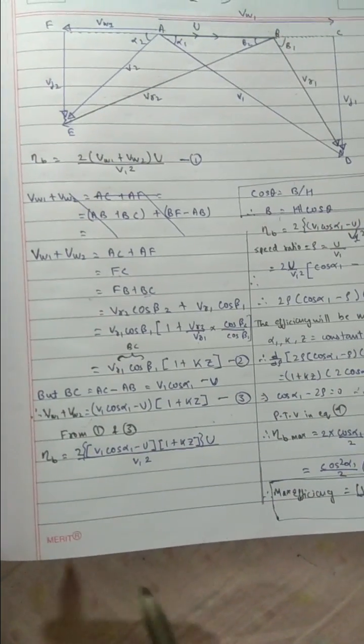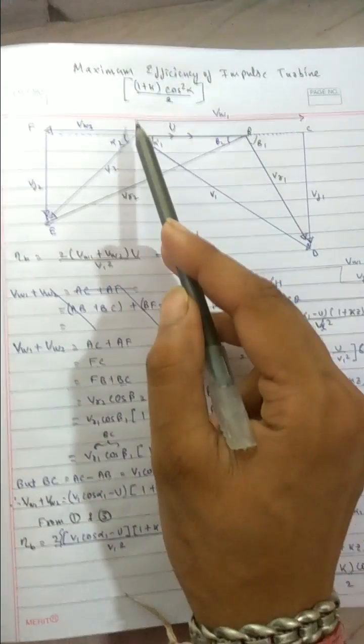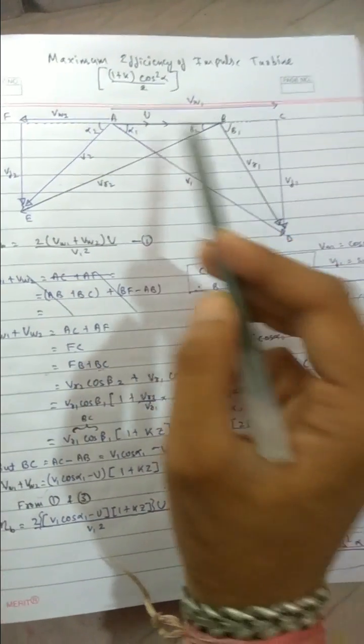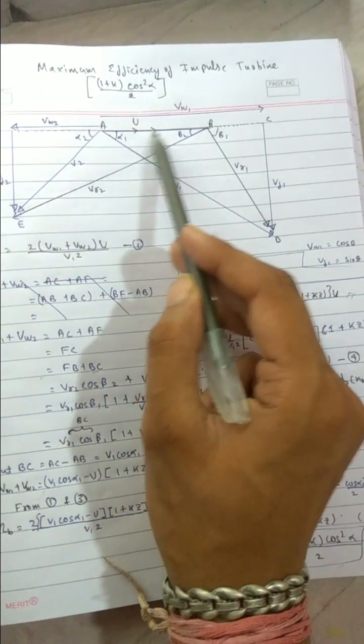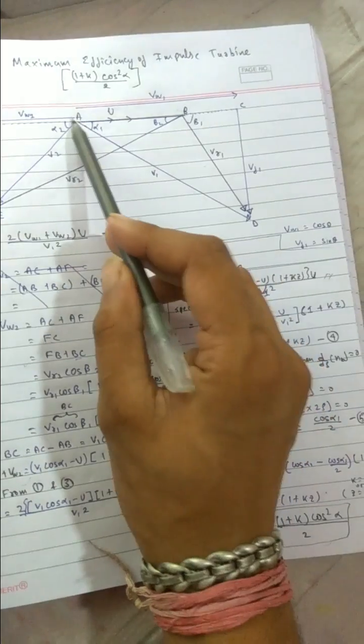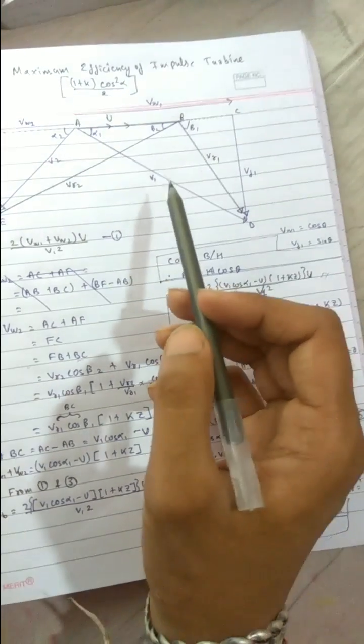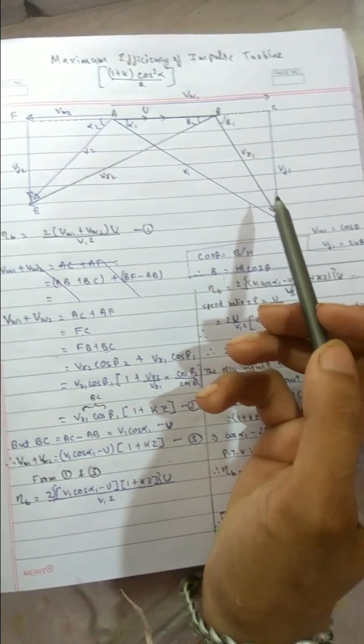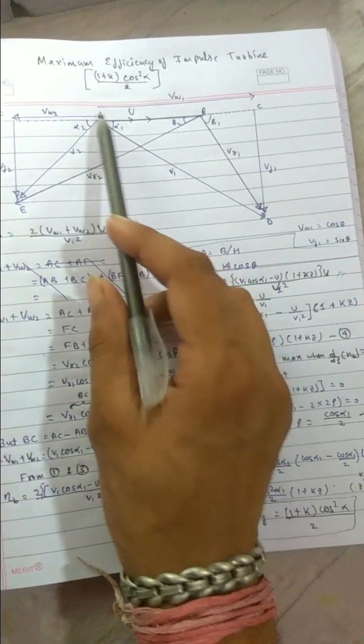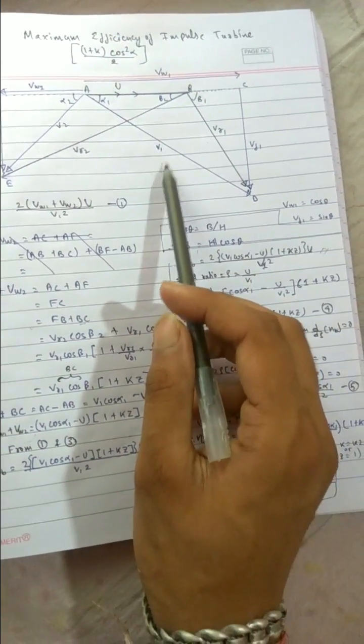Now further breaking it. Now you can see what is the value of this BC. AC minus AB we will get BC. So in AC what is the triangle now? This is the big triangle. AC is the base, and we know base equals to hypotenuse cos theta. So hypotenuse is V1.